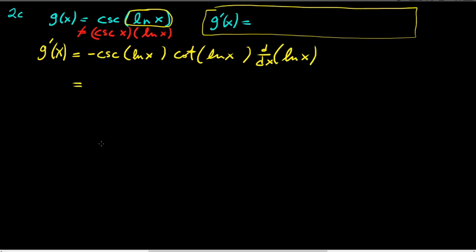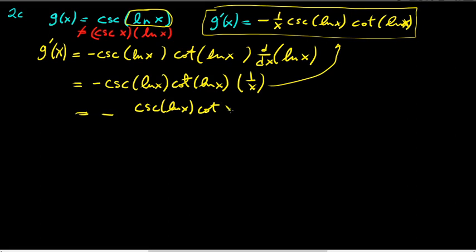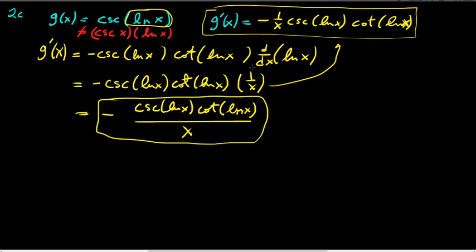The derivative of ln(x) is 1/x. So putting it together: g′(x) = -cosecant(ln x) · cotangent(ln x) · (1/x), or equivalently, -cosecant(ln x) · cotangent(ln x) all divided by x. The 1/x comes from the chain rule. Make sure you apply the chain rule here — that's mostly what this problem is about.